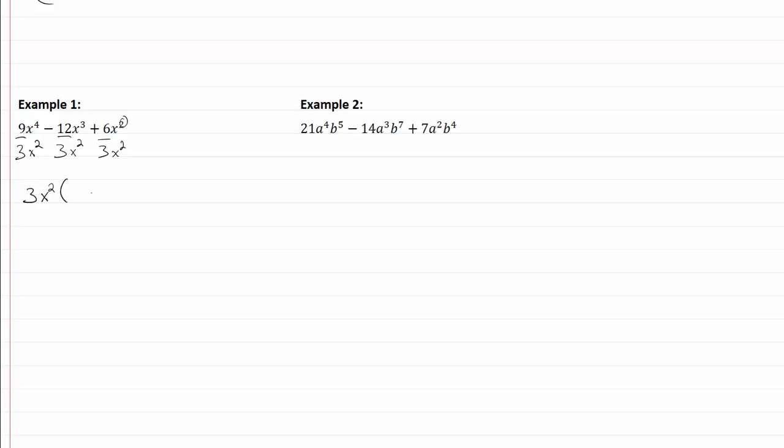So we're dividing each one of those by three x squared. Now I'm going to put my parentheses, and we're going to write what's left over inside. So I have nine divided by three, which would be three, x to the fourth divided by x squared is going to be x squared. Remember we're subtracting the exponents. Minus twelve divided by three is four, x cubed divided by x squared would be x.